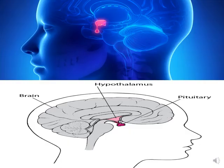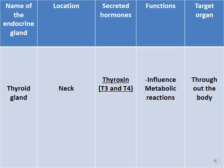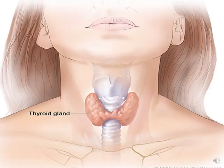The pituitary gland is located below the hypothalamus at the base of the brain. The second gland is the thyroid gland, found at the level of the neck. It secretes two hormones, T3 and T4, collectively called thyroxine. These hormones influence metabolic reactions related to metabolism, and they work throughout the whole body. So the thyroid gland is found in the neck and plays a role in metabolism.